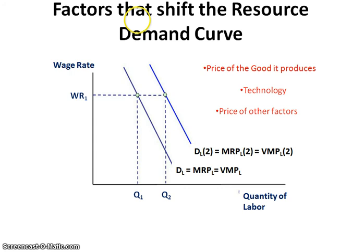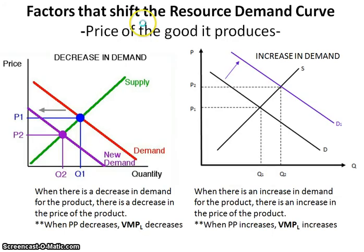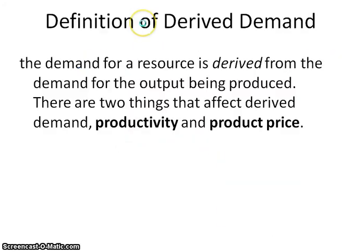So these are the different things that shift the resource demand curve. And again, making sure that you remember the definition for derived demand: the demand for a resource is derived from the demand for the output being produced.